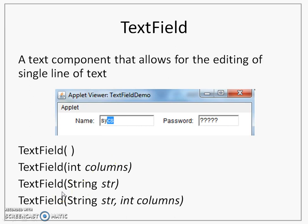The third constructor takes a string as a parameter, and this string is used for initializing the text field — whatever string you enter here will be displayed in the text field. The last constructor combines these two things together: first is the text with which you want to initialize, and second is the number of columns that will decide the width of the text field in a GUI.